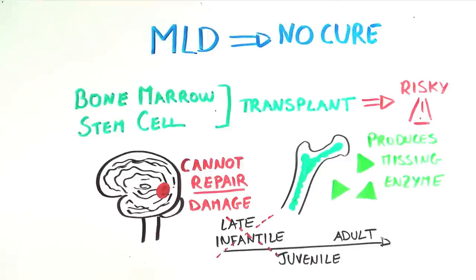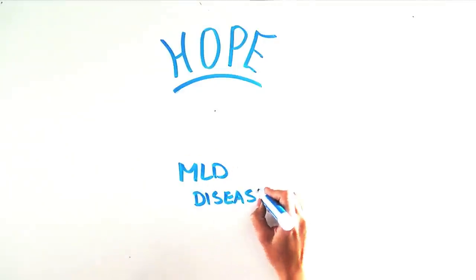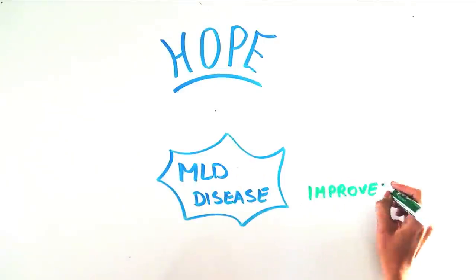However, transplant has slightly better but far from perfect outcomes with juvenile and adults before severe brain damage has occurred. But there is hope. In addition to ongoing slow improvements in transplant,